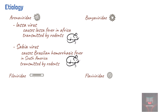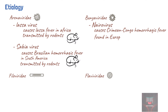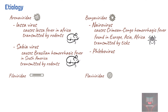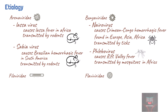Examples of viruses in the Bunyaviridae family include Nairo virus, which causes Crimean-Congo hemorrhagic fever. It is found in Europe, Asia, and Africa, and is transmitted by ticks. Phlebovirus causes Rift Valley fever, transmitted by mosquito and found in Africa.